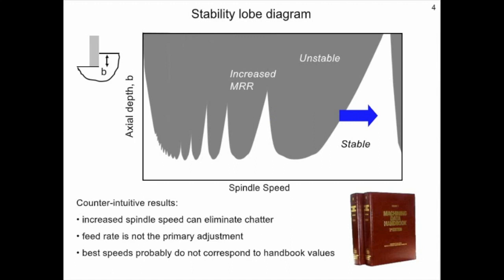This diagram represents some counter-intuitive results. The first is that increased spindle speed can be used to eliminate chatter. The second is that feed rate is not the primary adjustment. And finally, these best speeds probably do not correspond to the handbook values.